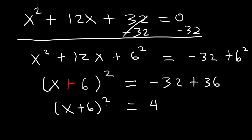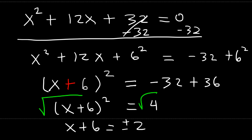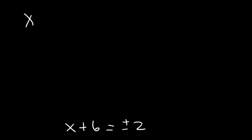So what should we do at this point? Take the square root of both sides. On the left side, the square root and the square will cancel, leaving behind just x plus 6. On the right side, the square root of 4 gives two answers: plus or minus 2. So we're going to write two equations: x plus 6 equals positive 2, and x plus 6 equals negative 2.